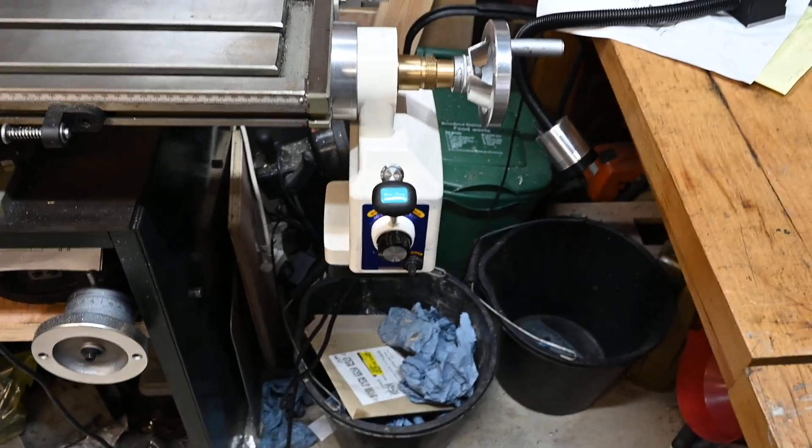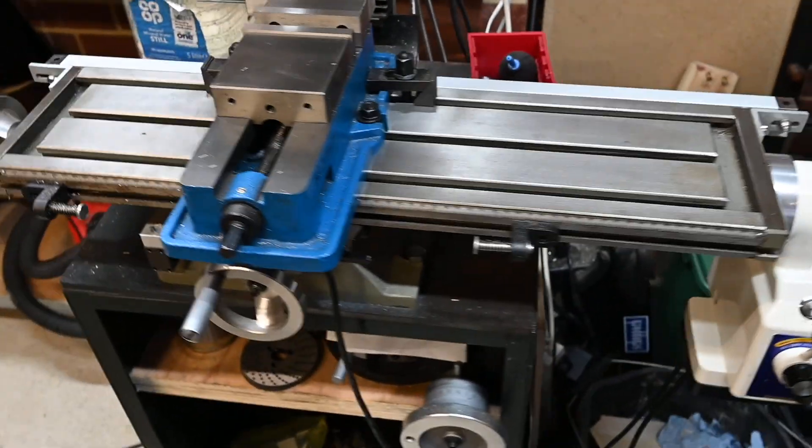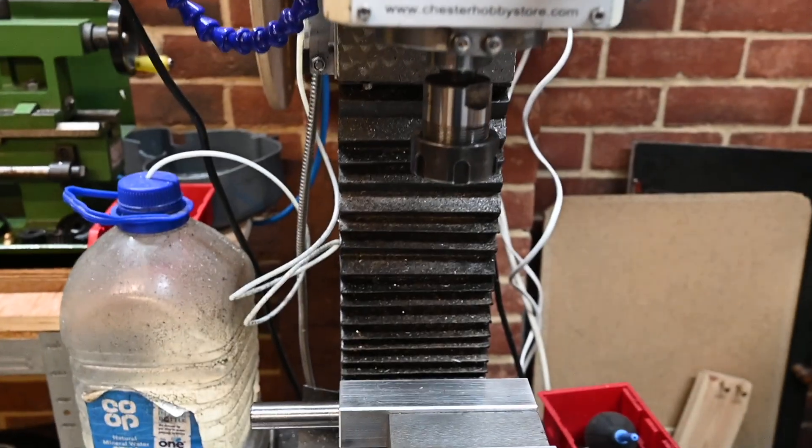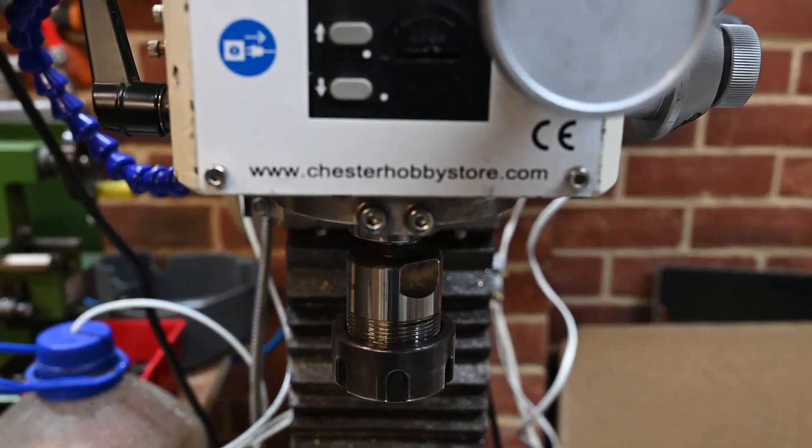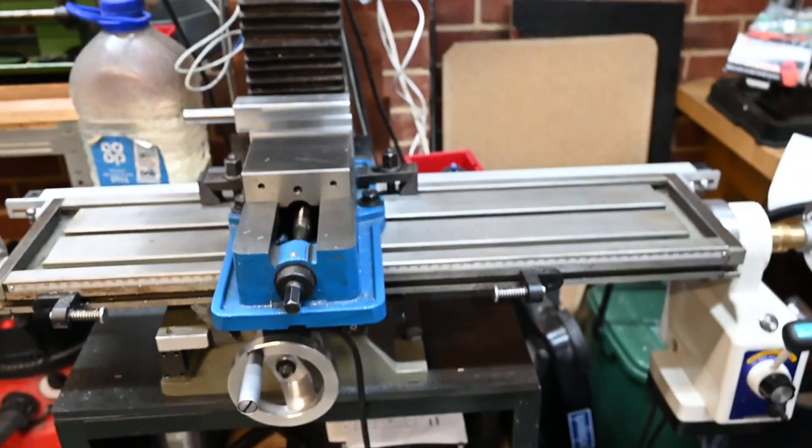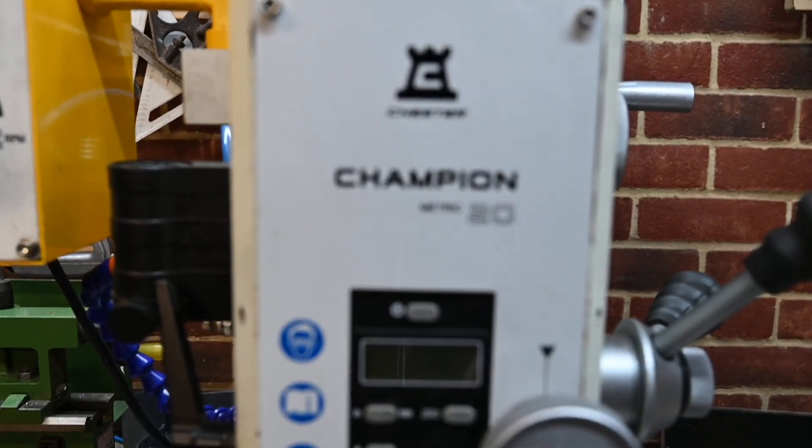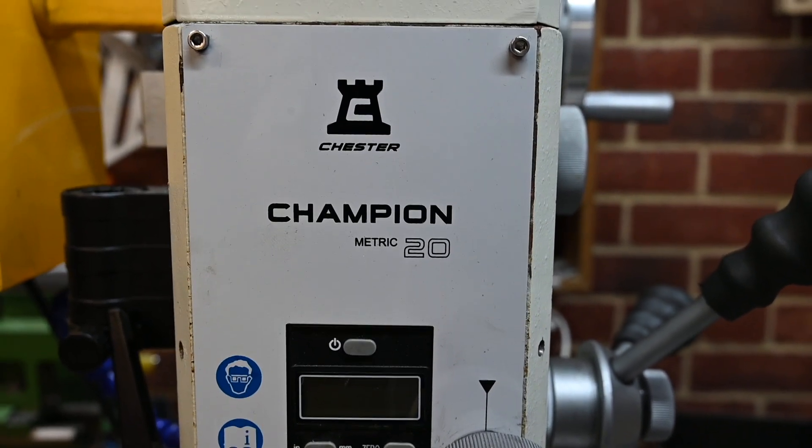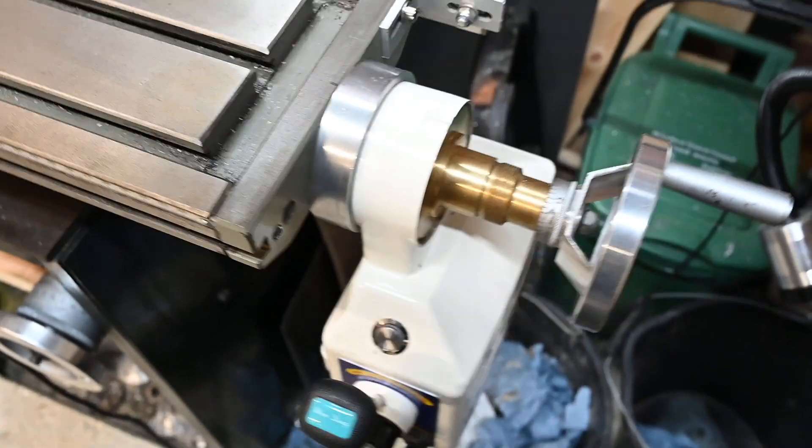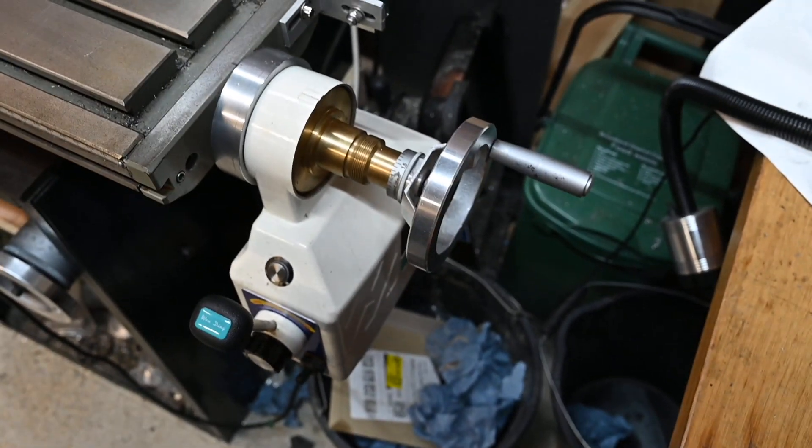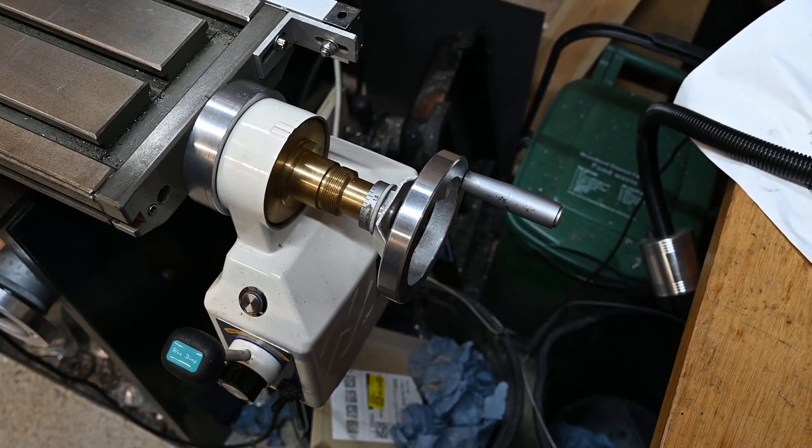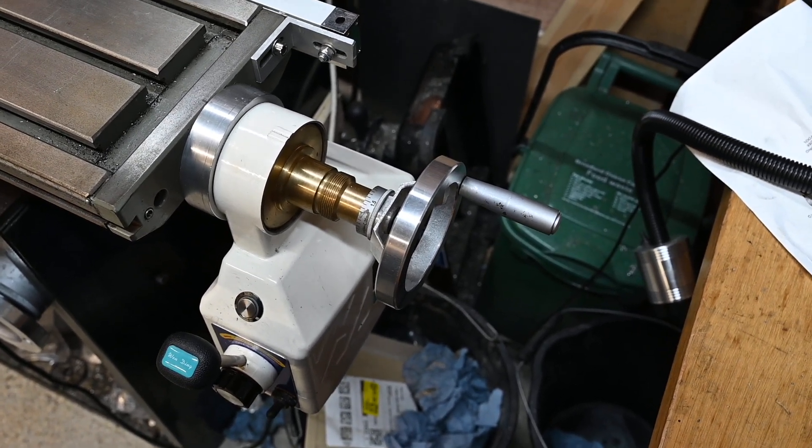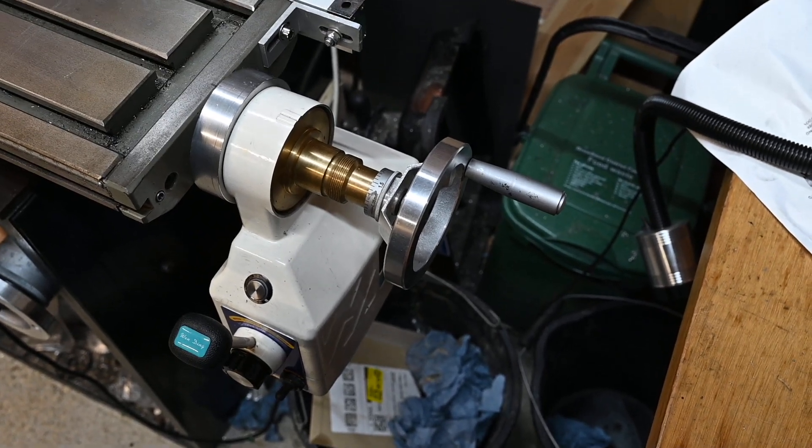This video shows how I modified my Chester mill, a Chester Champion Metric 20 that I got from Chester hobby store. I've got to take it apart today so I'm going to show you what I did to modify this mill to get this cheap Chinese power control working.